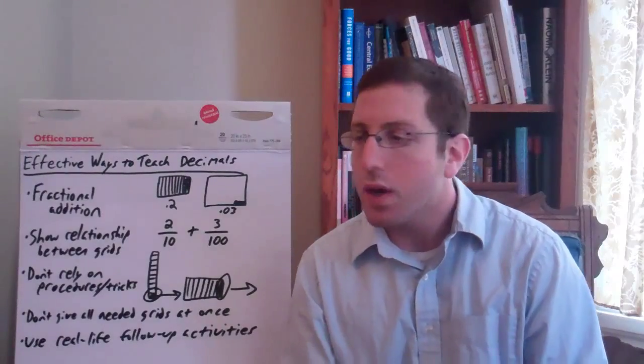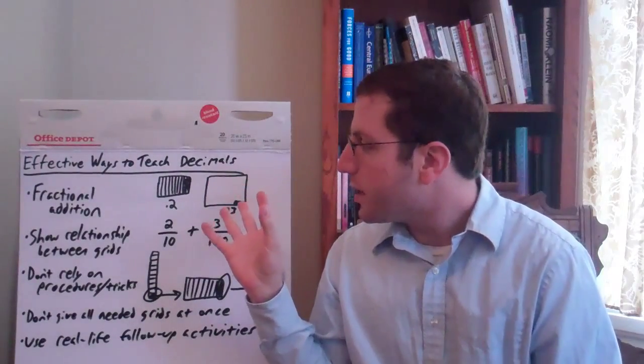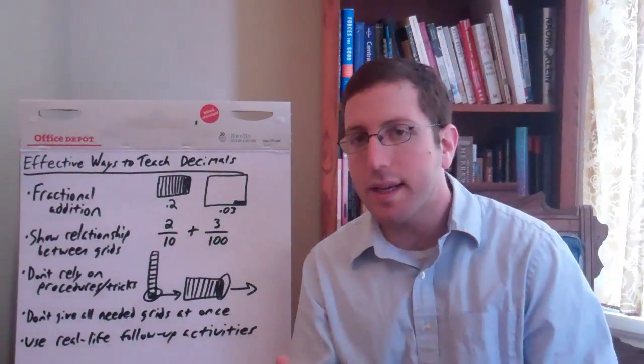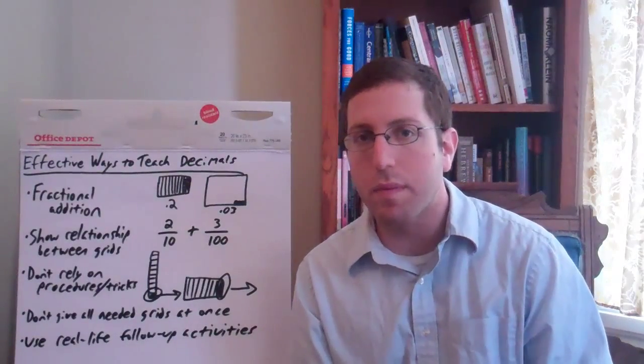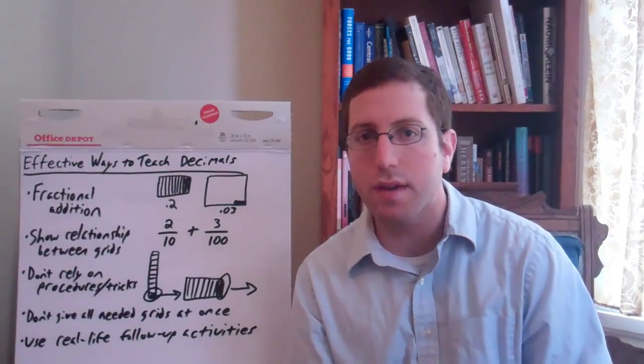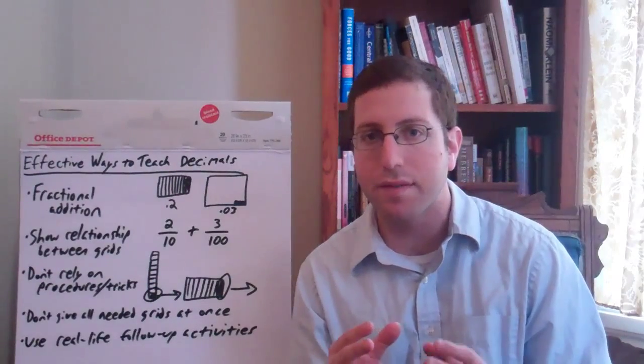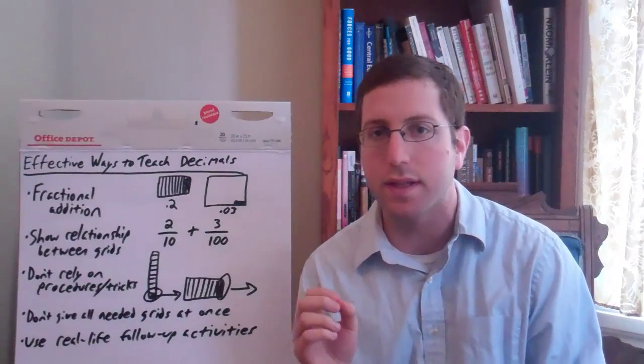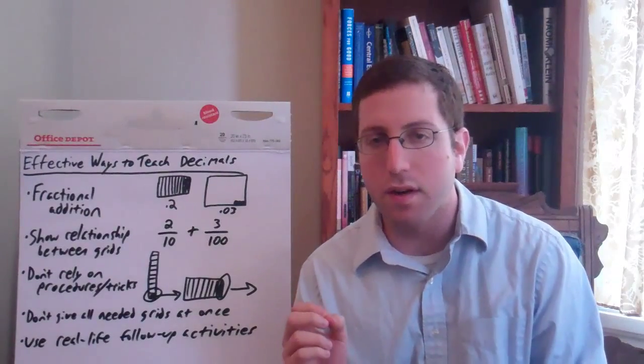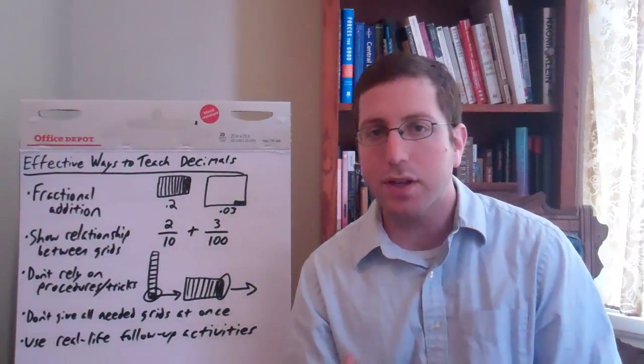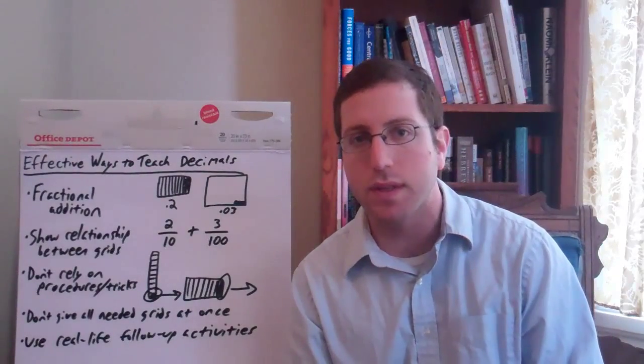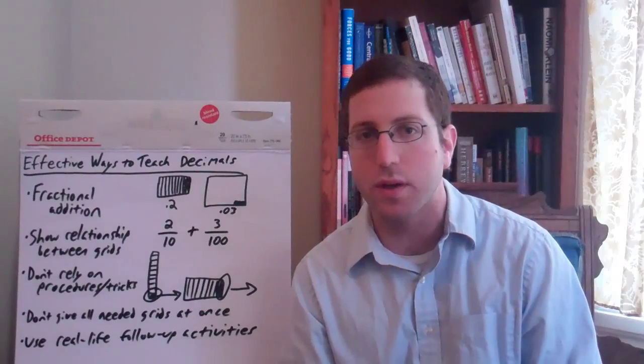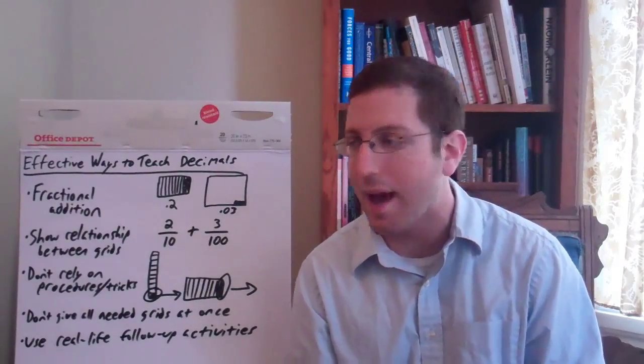What we've got here is the idea that the grids in and of themselves aren't a problem, but often when they're just given out to students and used to have students fill in two tenths, fill in three hundredths, fill in four thousandths, we're actually not really teaching students what place value means for decimals and how decimals really work. So there are a couple of suggestions that the authors have.